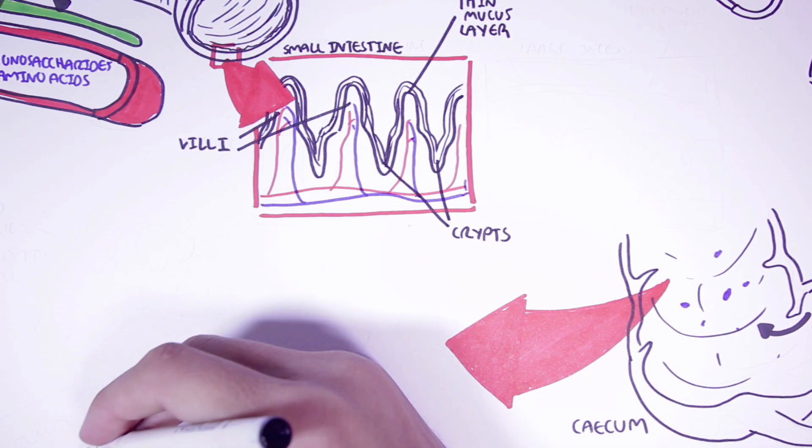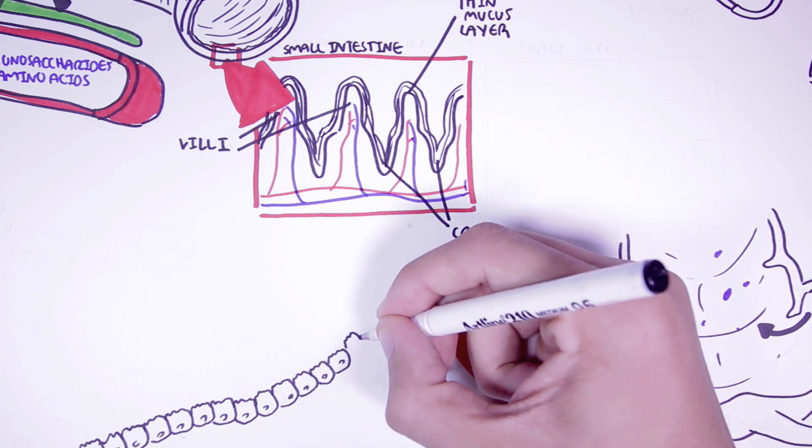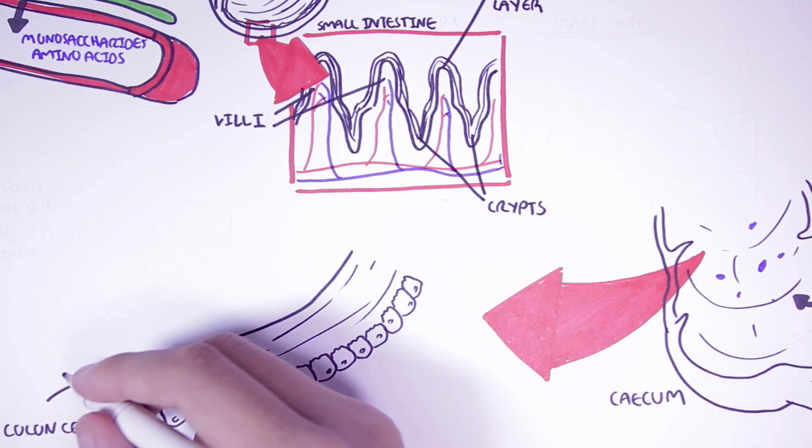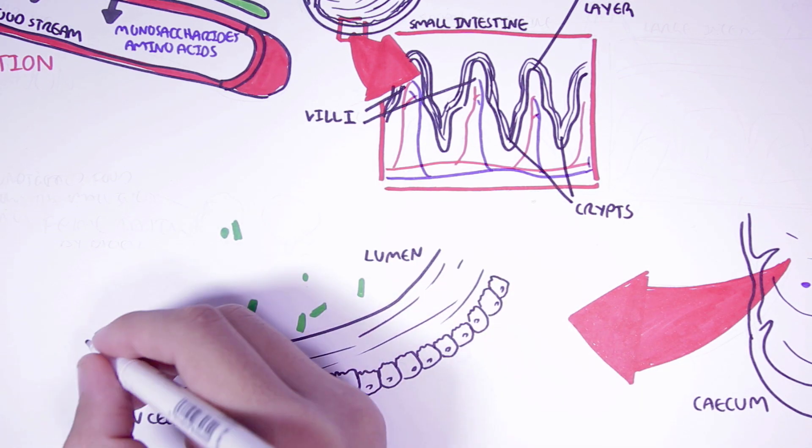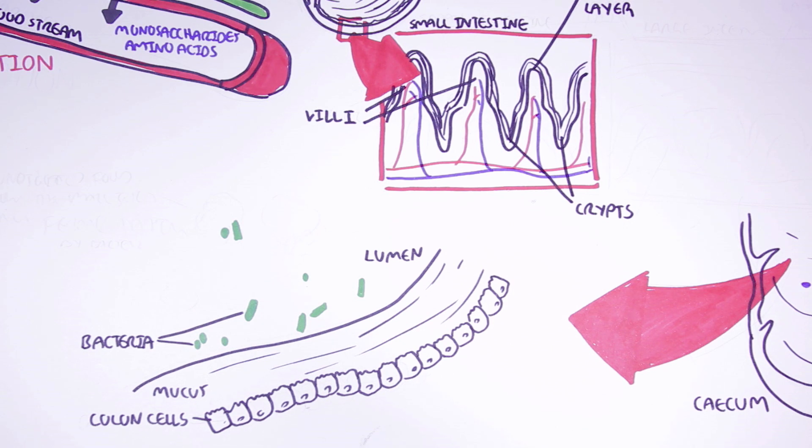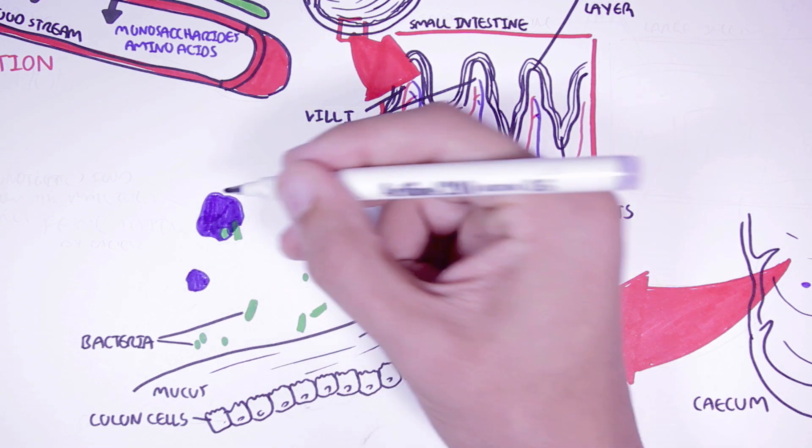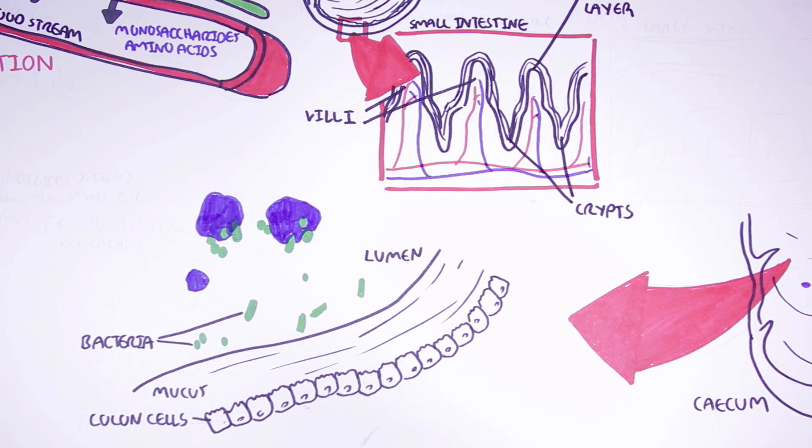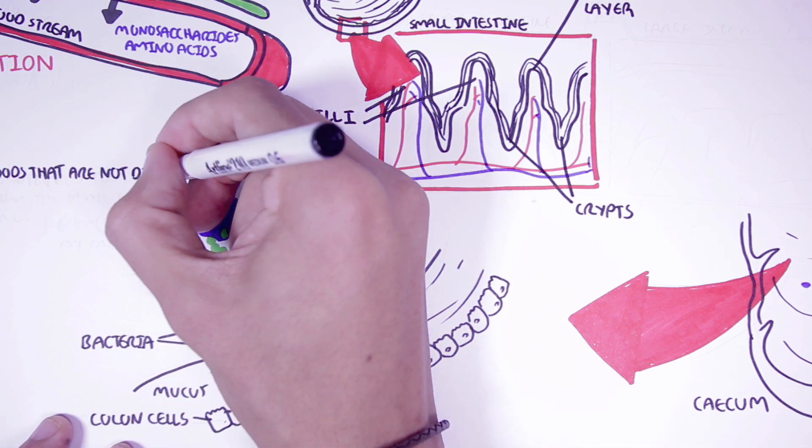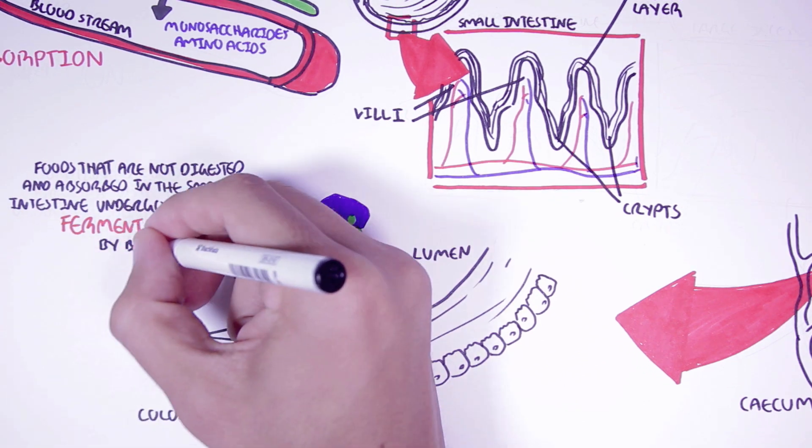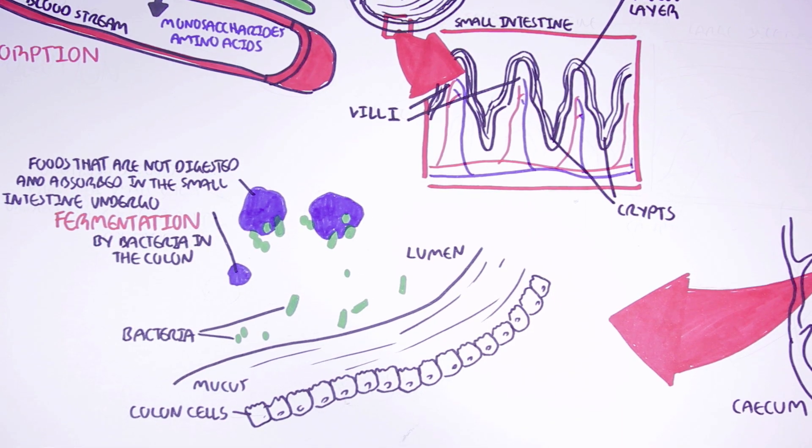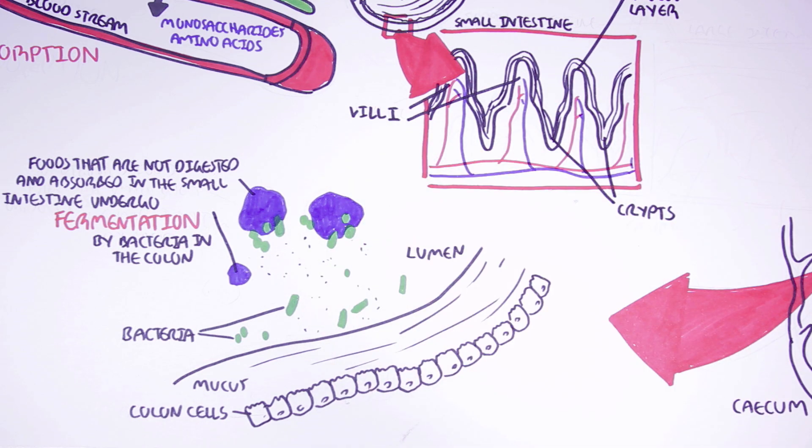So here we're zooming into this area. Here we have the colon cells. And we can find mucus above the colon cells. And so here is the lumen. Residing within the lumen are many types of bacteria that can digest these foods that have escaped digestion in the small intestine. So foods that are not digested and absorbed in the small intestine can undergo fermentation by bacteria in the colon. Through fermentation, the bacteria can produce many substances that the human body can use, such as short-chain fatty acids.